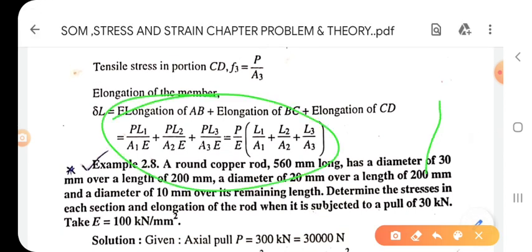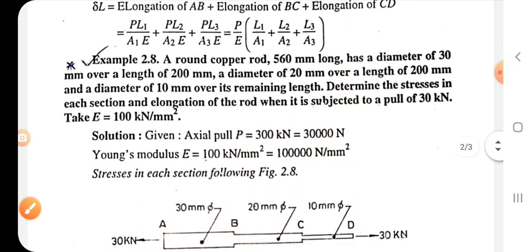Now using this formula, we will solve a problem. For example, a round copper rod 560 mm long has a diameter of 30 mm over a length of 200 mm, a diameter of 20 mm over a length of 200 mm, and a diameter of 10 mm over its remaining length. Determine the stress in each section and elongation of the rod when it is subjected to a pull of 30 kN. Take E = 100 kN/mm².